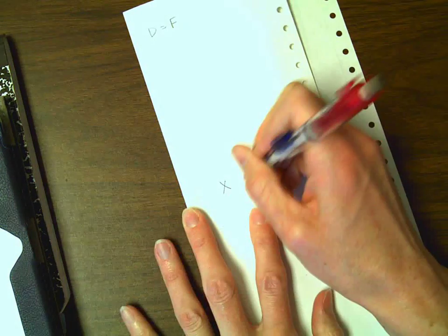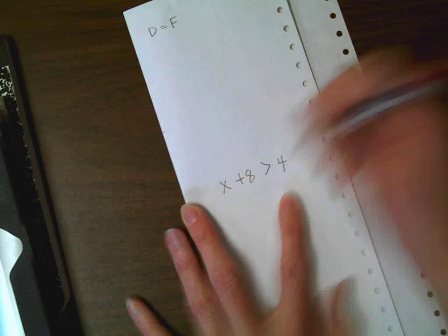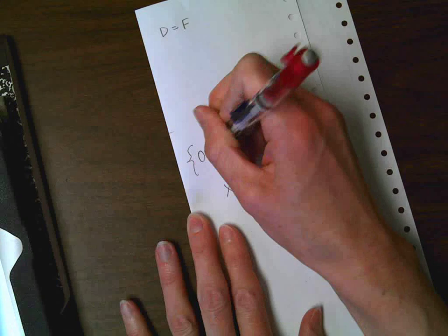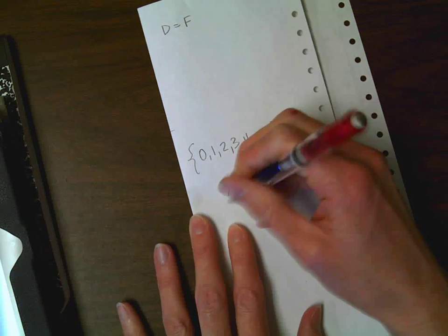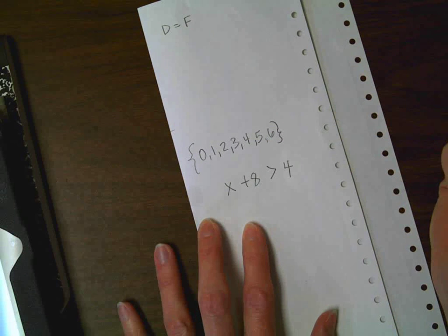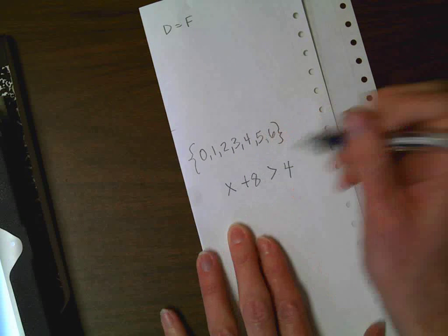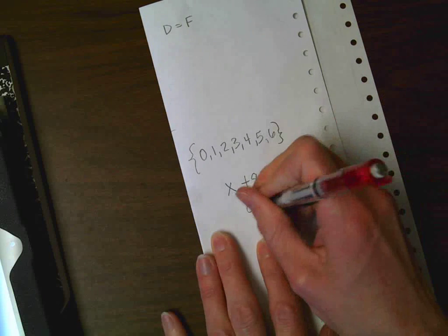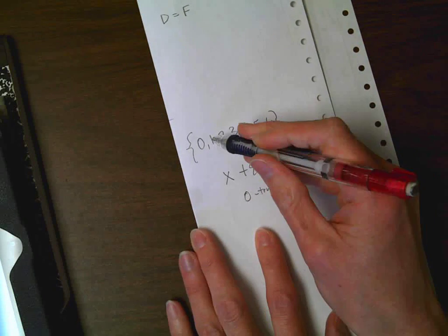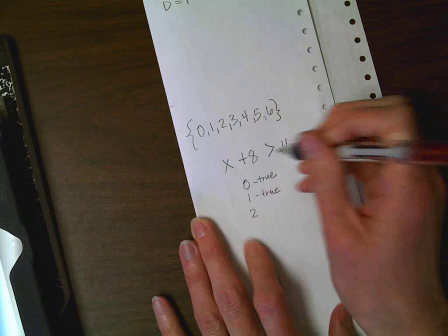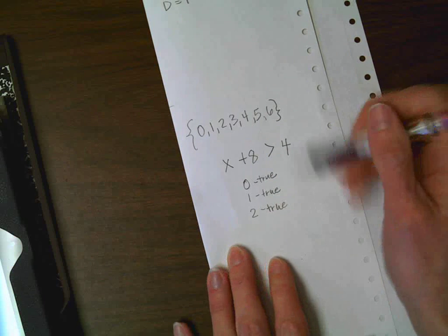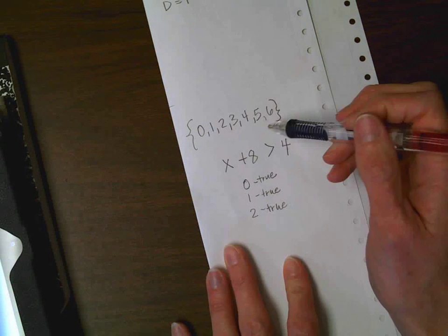One other thing that I want to show you is in your packet, you're going to see a problem that looks like this. You're going to have X + 8 > 4. And then they're going to give you the numbers 0, 1, 2, 3, 4, 5, and let's say 6. Your job is to decide which one of these values makes this a true statement. If we plug in 0, 0 + 8 is greater than 4. Is that true? So then for 0 you would write true. How about 1? 1 + 8 is greater than 4, so you would write true. How about 2? 2 + 8 is 10, which is greater than 4, so it would be true. Do you see the pattern? That's what you're going to have to do in your practice tomorrow.